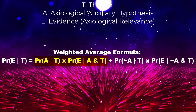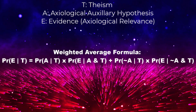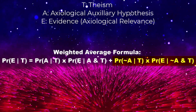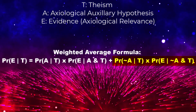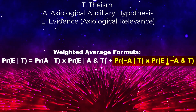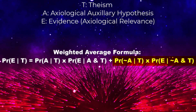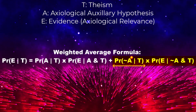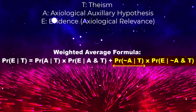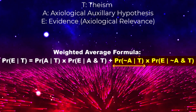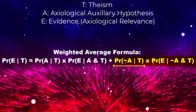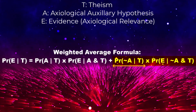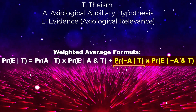The second term is the probability of not-A conditional on T, multiplied by the probability of E conditional on not-A and T. The probability of not-A conditional on T represents the probability of the negation of the auxiliary hypothesis, not-A, being true given theism T. This accounts for the possibility that the axiological auxiliary hypothesis might not hold.